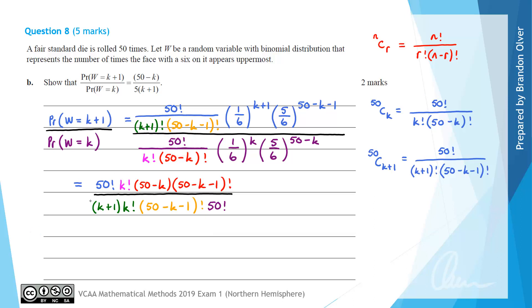Next, applying index laws: on the top line we have (1/6) to the power of K plus 1, and we subtract the power K from the bottom, leaving (1/6) to the power of 1. Similarly, (5/6) appears in both numerator and denominator; the power on the top is (50 minus K minus 1), and subtracting (50 minus K) gives a power of negative 1.